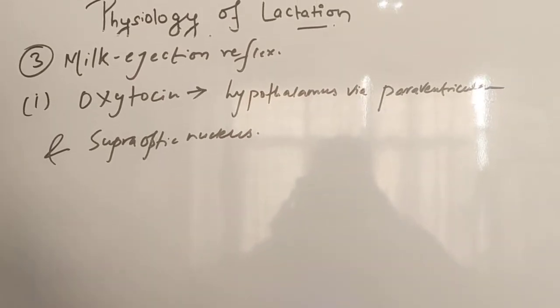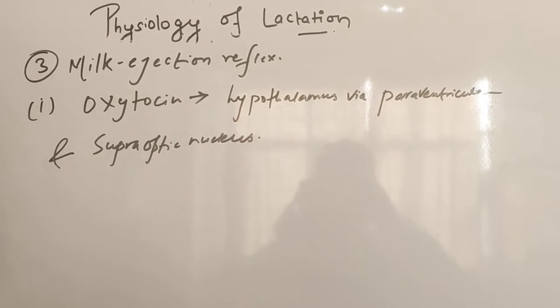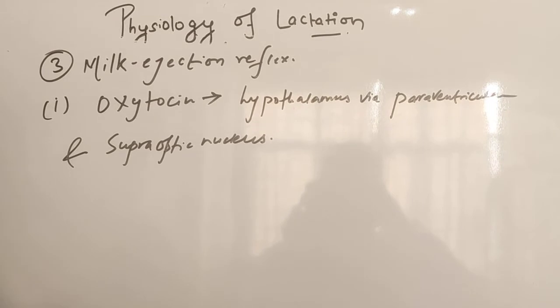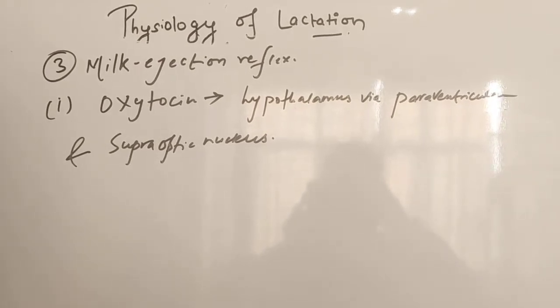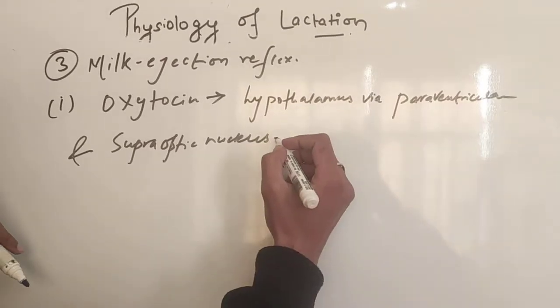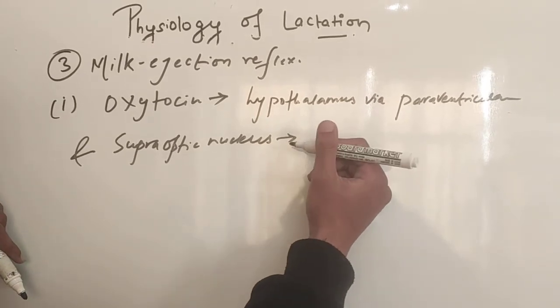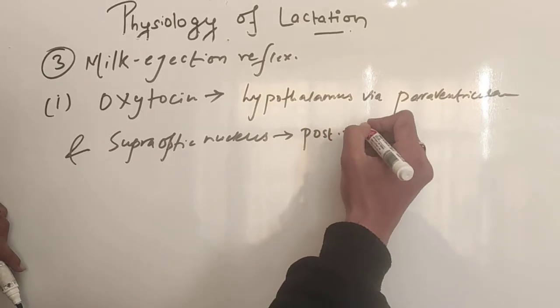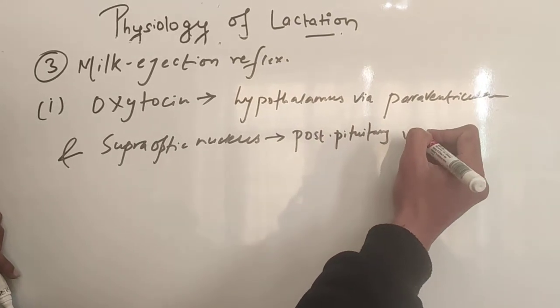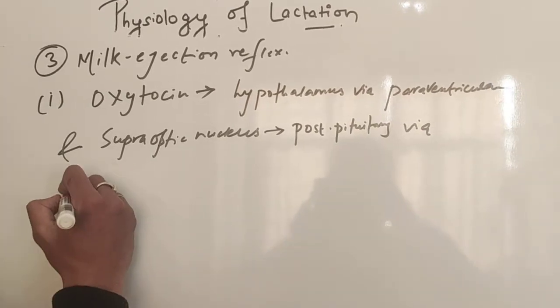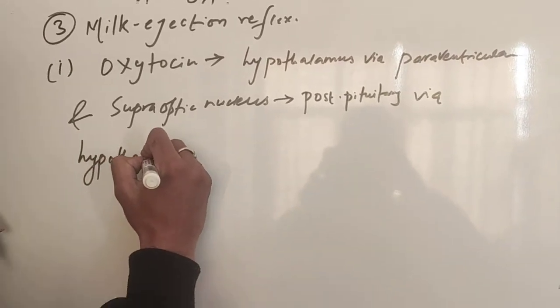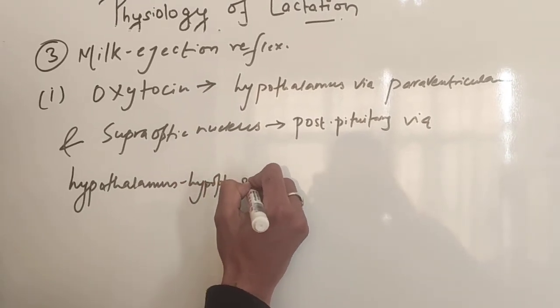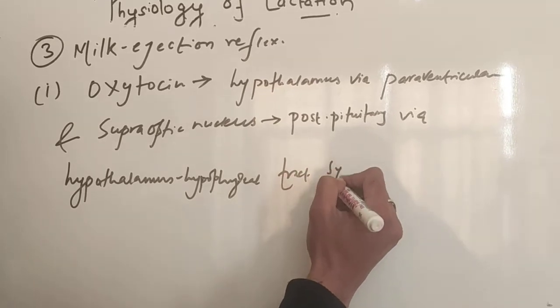Paraventricular nucleus has its majority of role in production of oxytocin, whereas supraoptic nucleus also produces but in small quantities. From there it goes to posterior pituitary for storage via hypothalamus hypophysial tract system.